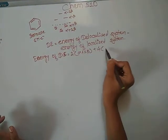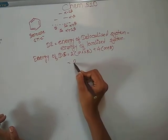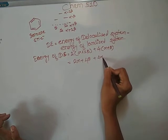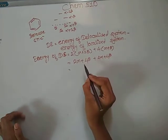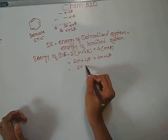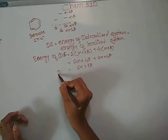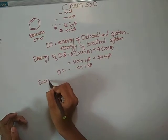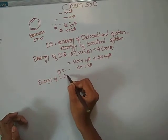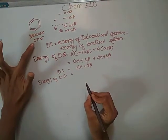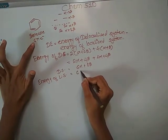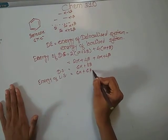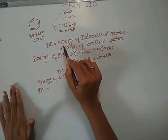That gives us 2α + 4β + 4α + 4β, which equals 6α + 8β as the energy of the delocalized system. The energy of the localized system for benzene, having six pi electrons and three bonds, is equal to 6α + 6β.